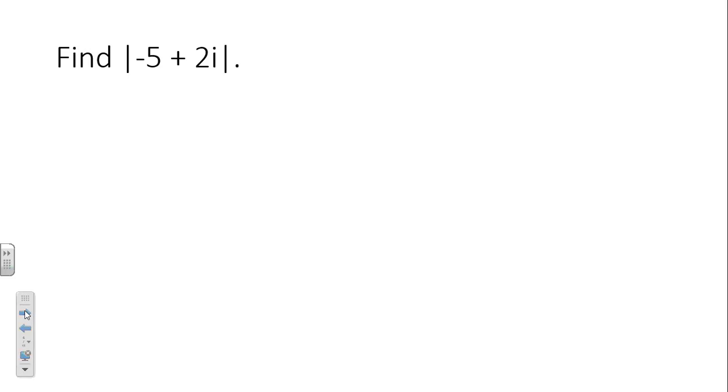So, if we want to find the absolute value of negative 5 plus 2i, what are we going to do? Square root of negative 5 squared plus 2 squared, right? Negative 5 squared is 25, 2 squared is 4, 25 plus 4 is 29. Easy peasy, right? So, nothing scary about these. As long as we make those connections and we understand that we're doing the same process.